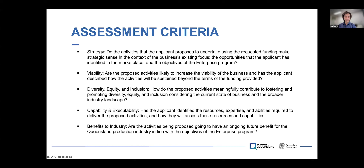Secondly, we want to make sure that the proposed activities are going to be viable — meaning the business has contemplated how you're going to continue to undertake those activities beyond the terms of funding. We don't want activities which are undertaken just for a short burst of time and then stop as soon as the funding stops. We want to ensure there is long-term viability and that they'll ideally be able to provide cash flows and revenues to make themselves sustaining over the longer term. Thirdly: diversity, equity, and inclusion.